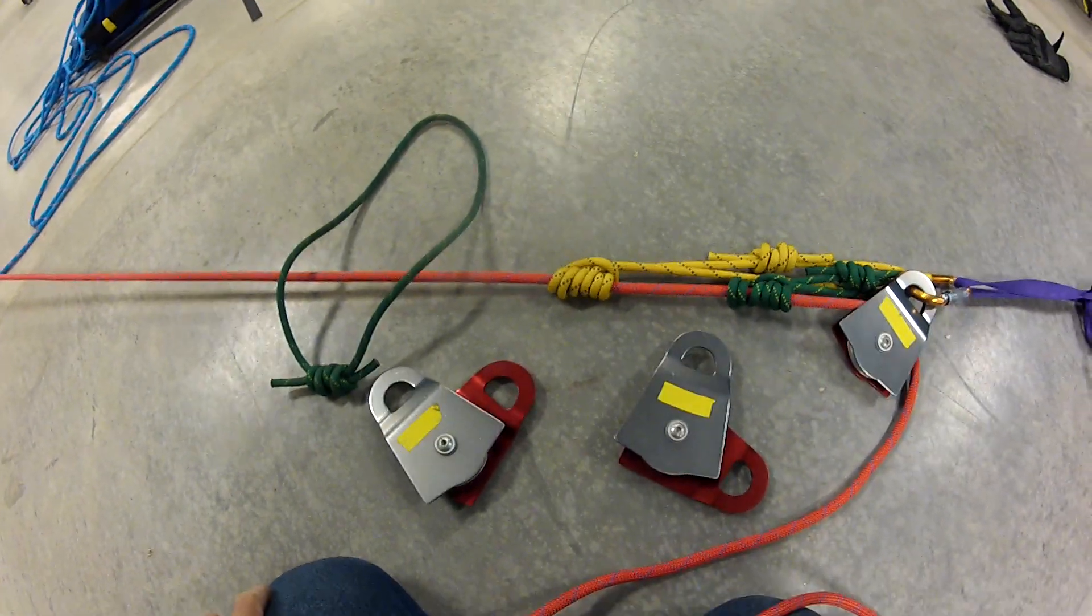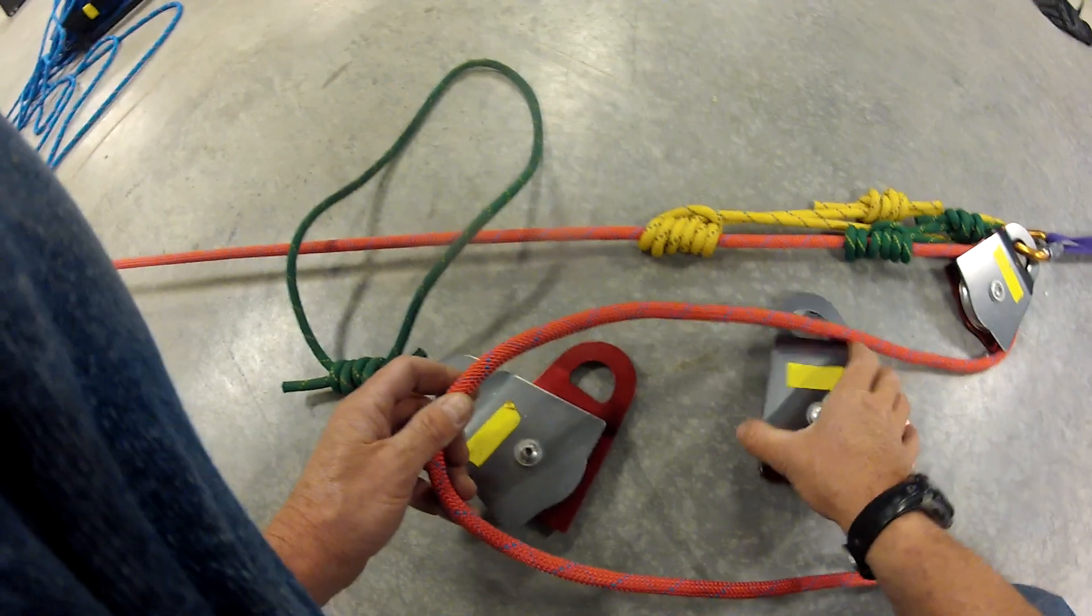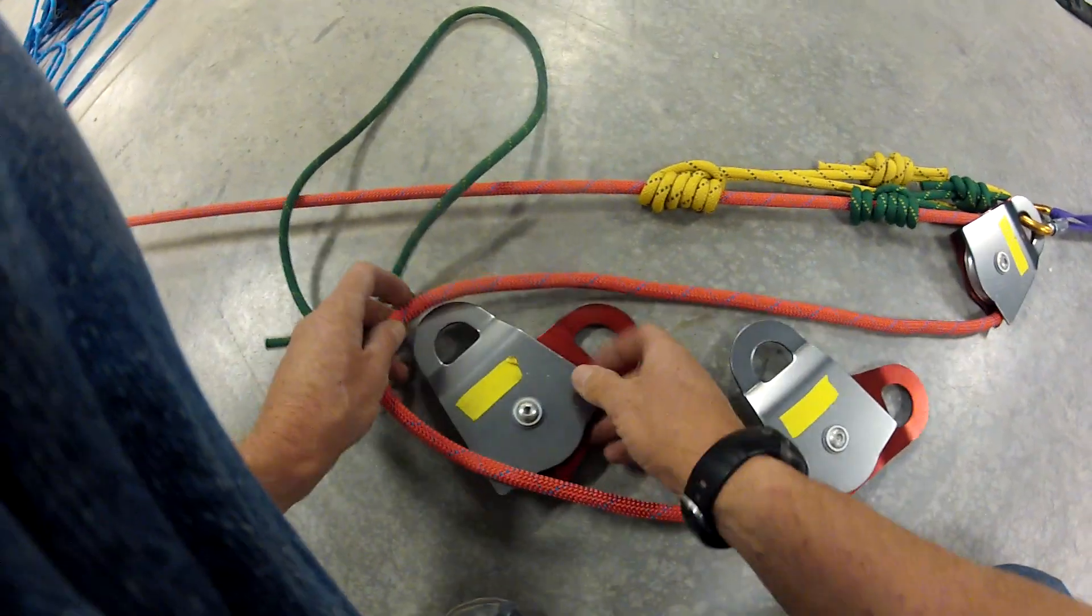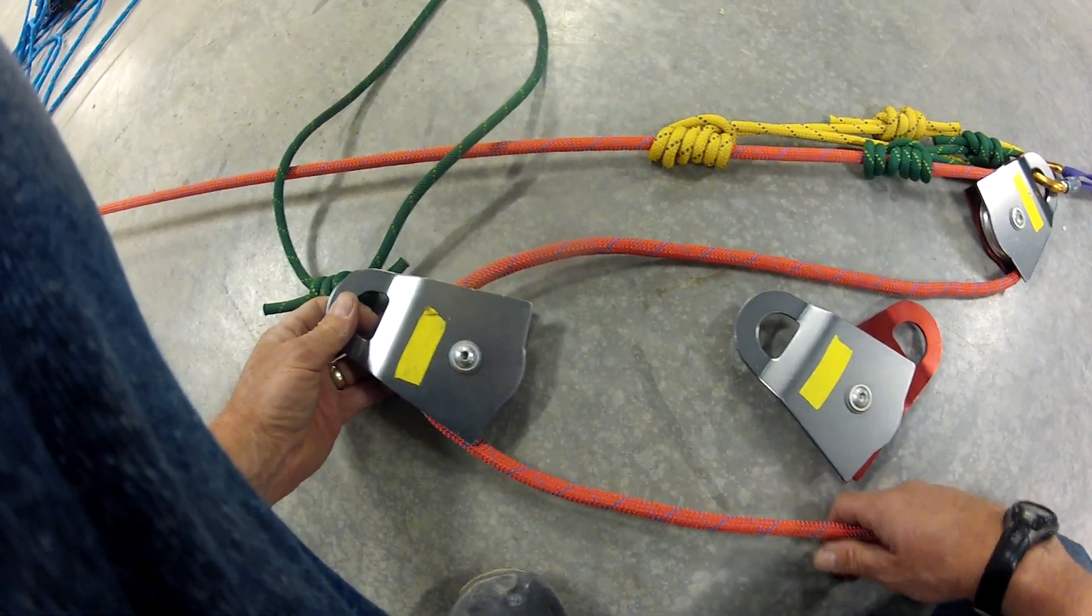If all I was going to build was a 3-to-1 with no change of direction, then all I would need is this bottom pulley, and you can build it like a Z for the 3-to-1. So, I just come down here, and that's all I need.